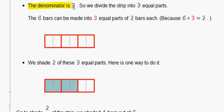The denominator is three, so we divide the strip into three equal parts. The six bars can be made into three equal parts of two bars each, because six divided by three equals two.